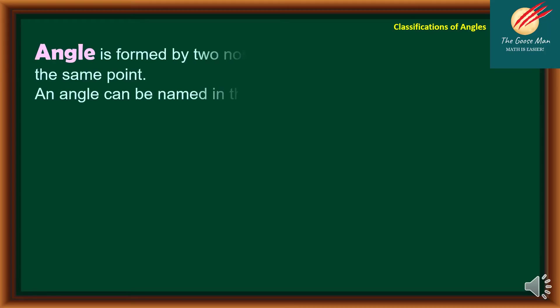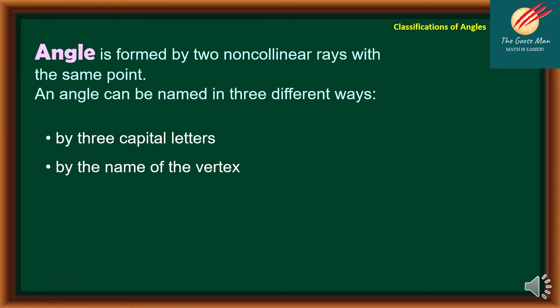To define our topic, an angle is formed by two non-collinear rays with the same point. An angle can be named in three different ways: by three capital letters, by the name of the vertex, or by a number.